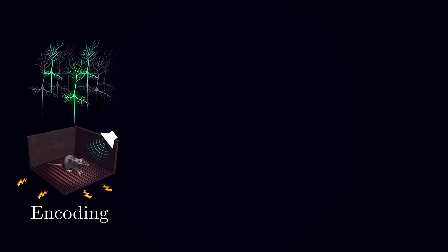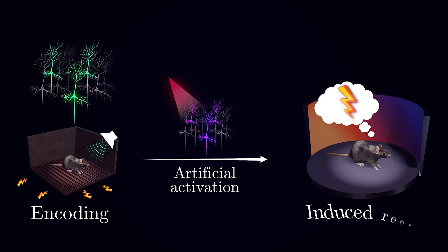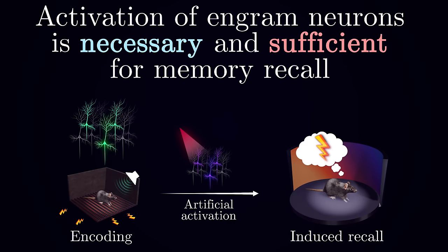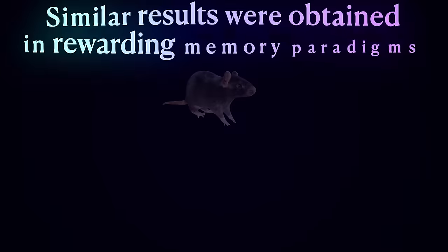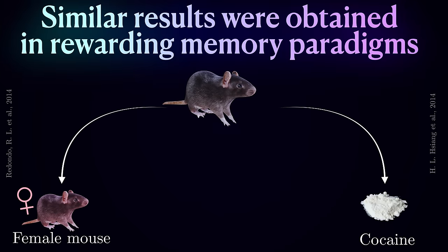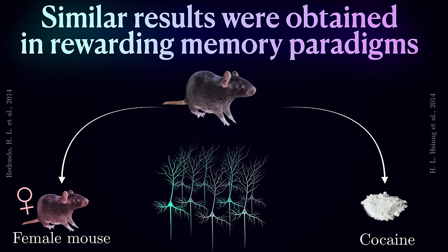And if you selectively activate them in the absence of the conditional stimulus, the mouse will freeze even though it is not presented with anything associated with the shock. So, the activation of engram neurons is not only necessary, it is also sufficient to induce a memory recall. Notably, similar results were obtained in other memory paradigms, when mice learned to associate conditional stimuli with rewards rather than pain, suggesting that these principles of engram reactivation are not unique to fearful memories.